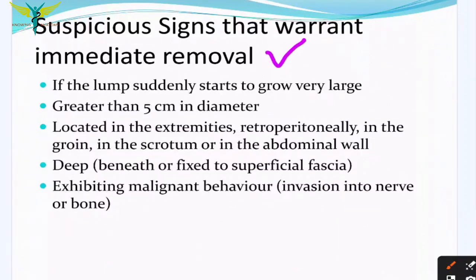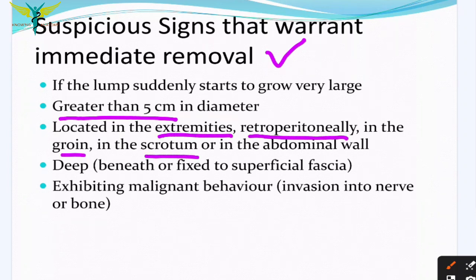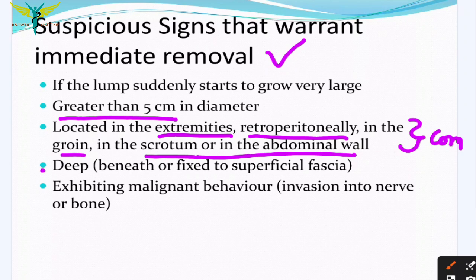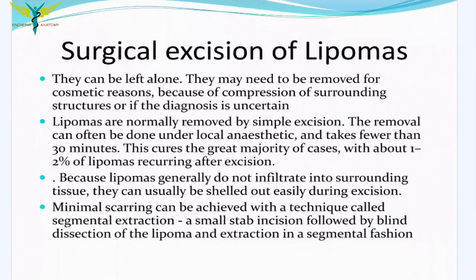Suspicious signs where removal is necessary include: if the lump suddenly starts to grow very large, it can be malignant; if the swelling is greater than 5 centimeters in diameter; if it is located in the extremities, retroperitoneally, in the groin, scrotum, or abdominal wall; if the lipoma lies deep beneath or is fixed to the superficial fascia; or if it exhibits malignant behavior such as invasion into the nerve or underlying bone.